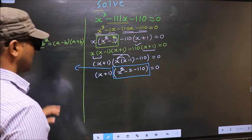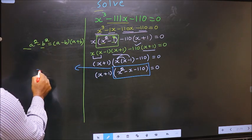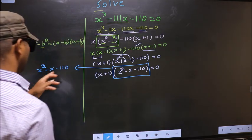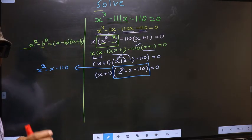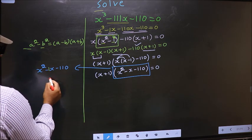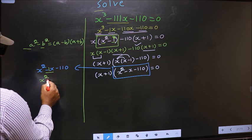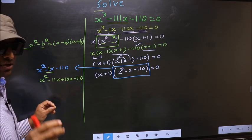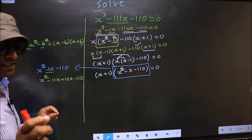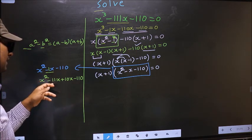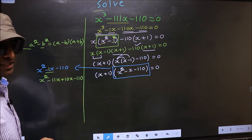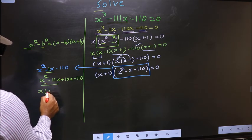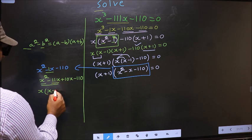Now we got a quadratic here, so I will factorize this quadratic: x² - x - 110. To factorize this we should split the middle term. In place of -x, I write -11x + 10x - 110. Directly I have split -x into -11x + 10x. From these two terms what can be taken out common is x, so here you get x - 11.